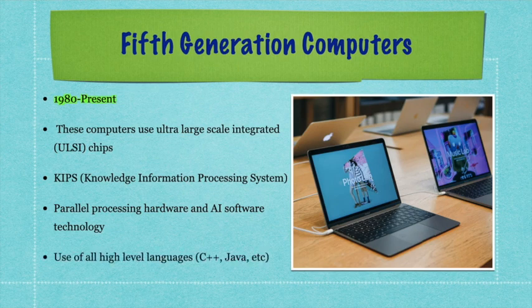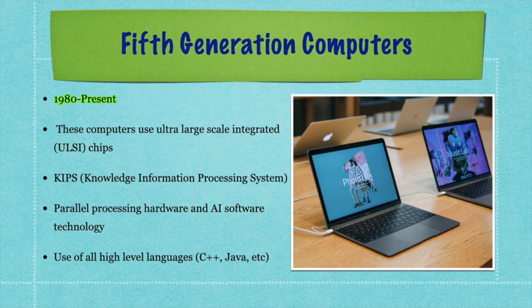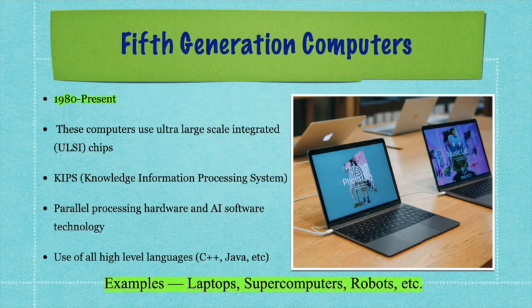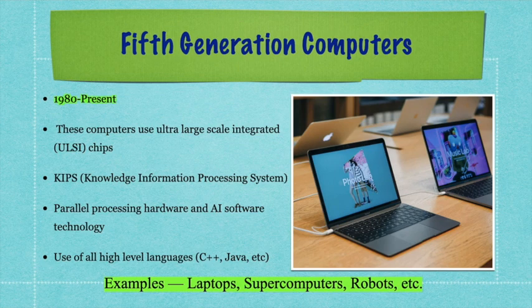In fifth generation computers, high-level languages like C++, Java, and others are used. Memory includes memory chips and optical disks. The internet and World Wide Web also belong to this generation — Tim Berners-Lee introduced it in 1989, which we will cover in the next video. Operating systems include Windows 7, 8, XP, Linux, and Mac OS. Supercomputers and robots are direct examples you might be asked about in exam questions.